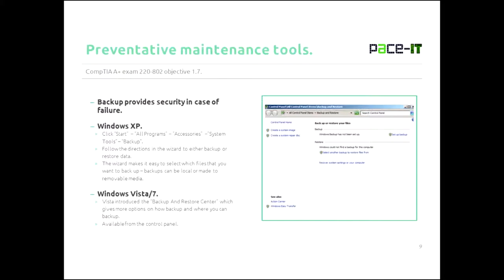Now let's talk about some tools you can use to put these best practices into place. The first one is backups. Windows XP, Vista, and 7 all have backup utilities. The Windows XP backup utility can be reached by clicking Start, then All Programs, Accessories, System Tools, then Backup.